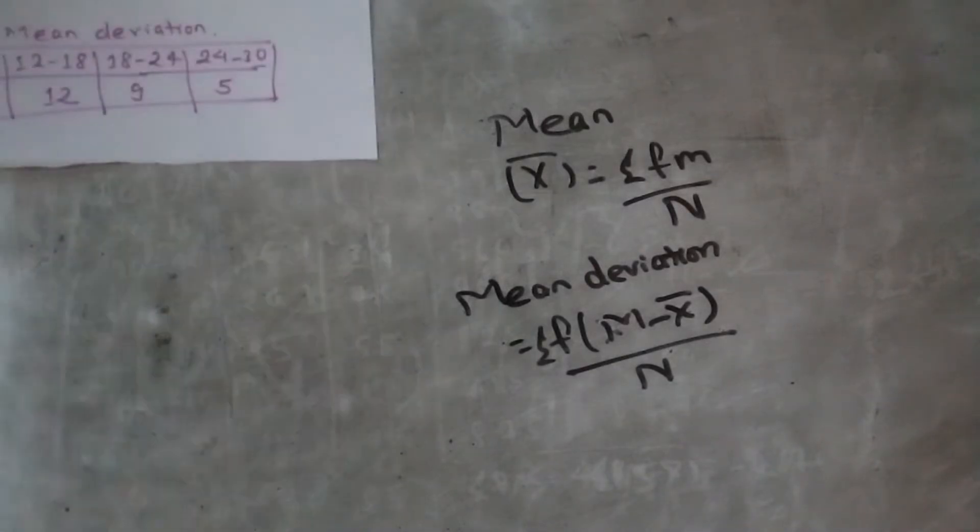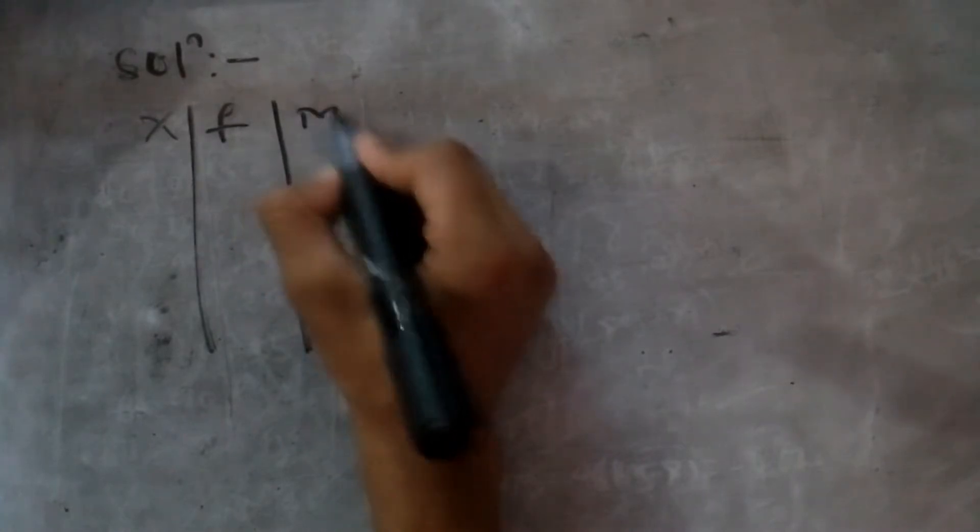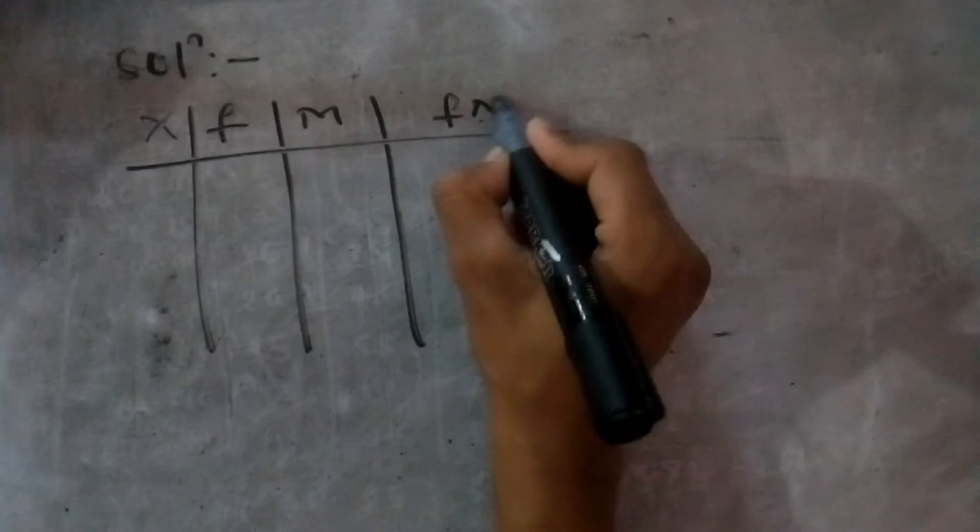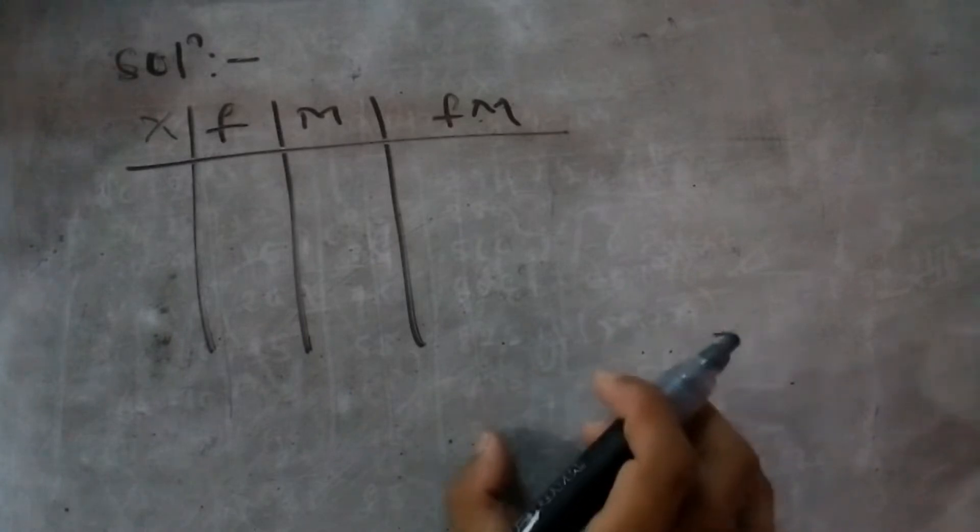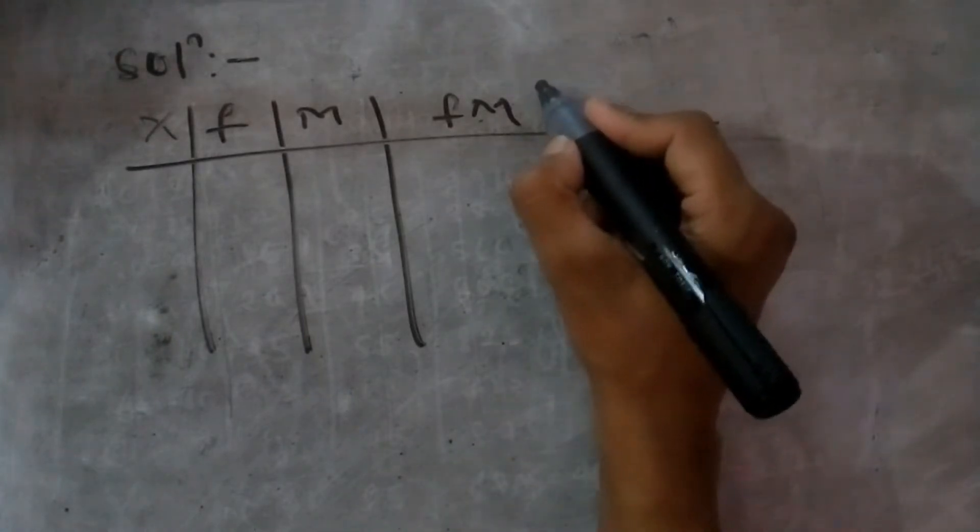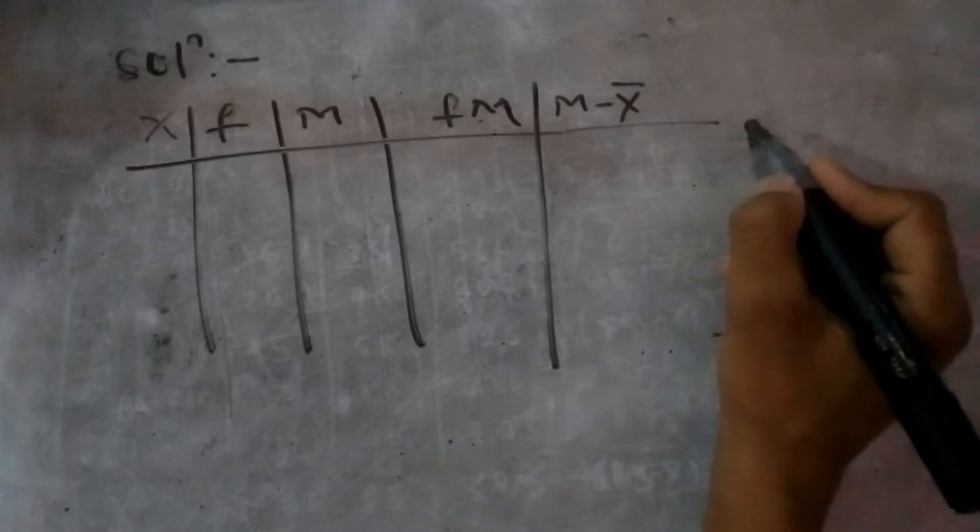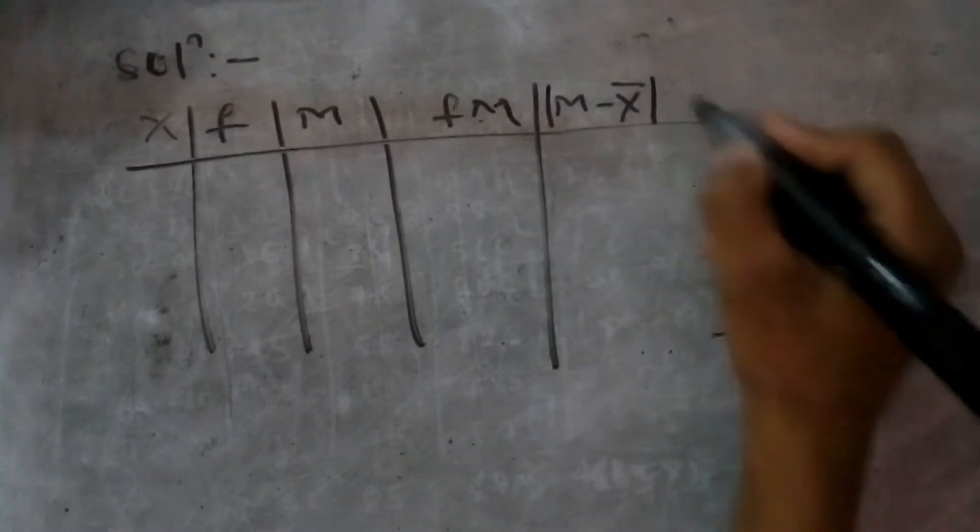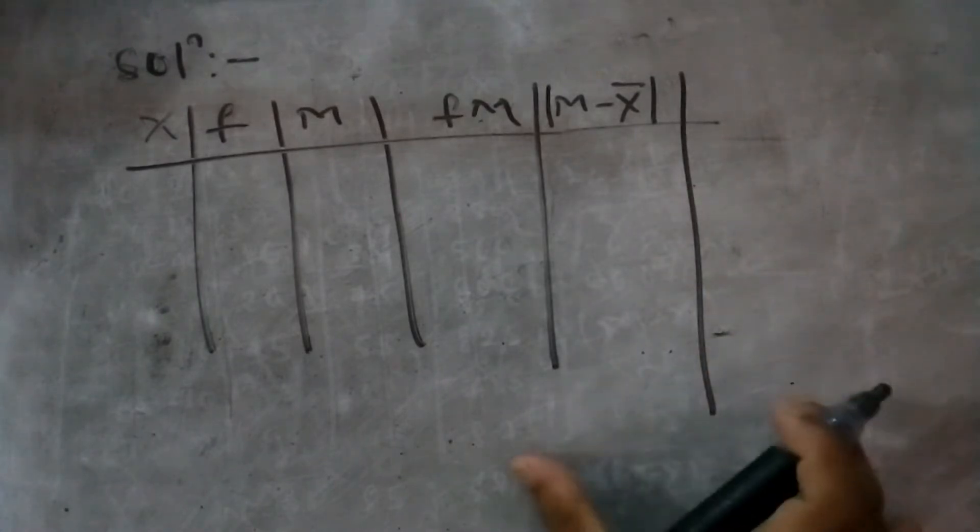Okay, I will show you the solution. Let me set up the table with columns: x, f, m, fm, and m minus x bar.